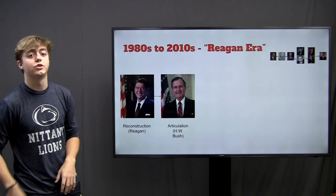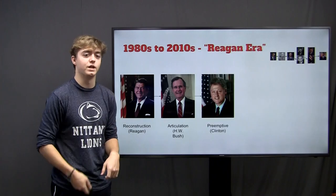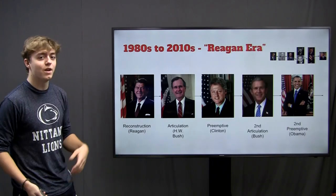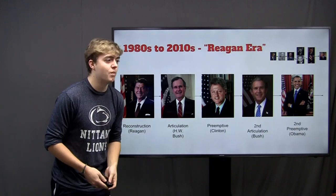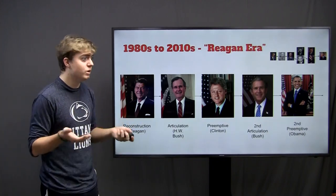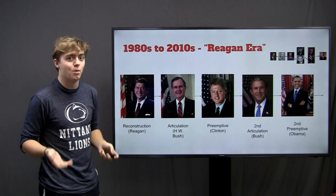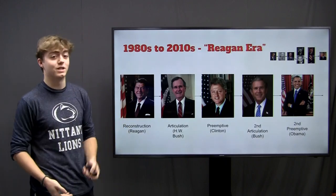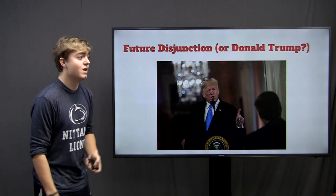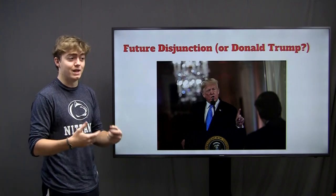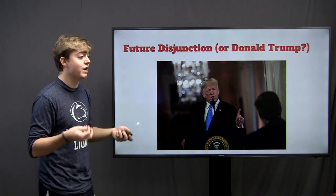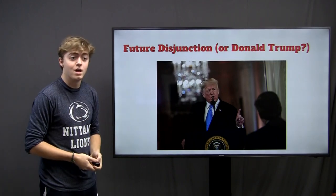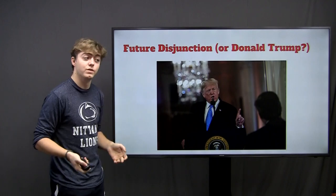So we start with Reagan as our Reconstruction president, Bush Sr. as Articulation, Clinton as Preemptive, Bush Jr. as the second Articulation, and finally Obama as the second Preemptive. Now you may be wondering — who is our Disjunction president? Many scholars believe that the next Disjunction president is Donald Trump, and people theorize that his frustrated cabinet may bring down the Reaganite political era that has stayed with us for over the last few decades.